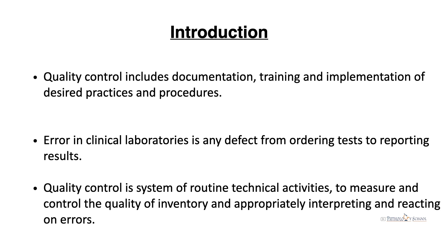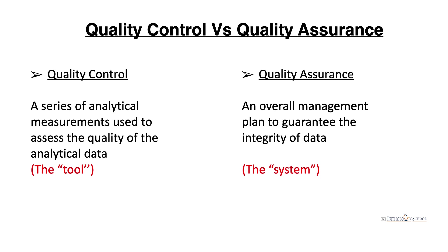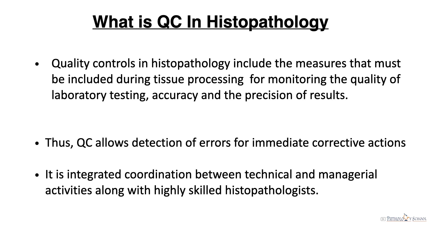Quality control is a system of routine technical activities to measure and control the quality of inventory and to appropriately interpret and react on errors. It is used to assess the quality of analytical data, and quality assurance is an overall management plan to guarantee the integrity of data. Quality control in histopathology includes measures that must be included during tissue processing for monitoring the quality of laboratory testing, its accuracy, and precision of results.